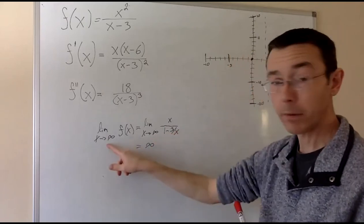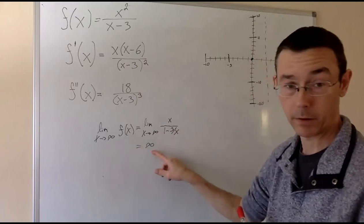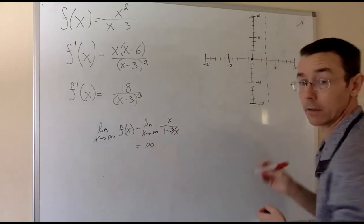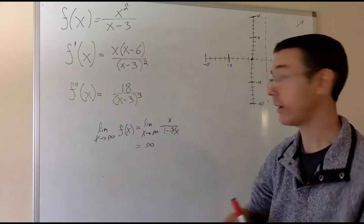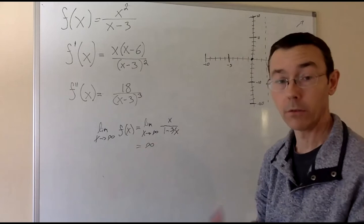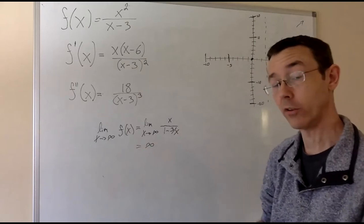As x gets bigger and bigger, y gets bigger and bigger. On the right side of the graph, it's going to go off in that direction. So there's not going to be a horizontal asymptote in that direction, but the value of the function is just going to increase without bound.